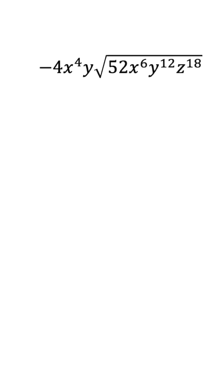When we look under the radical, we notice that the exponents are all even. And because we have a power of 2, this means that none of the variables are going to be left under the radical.